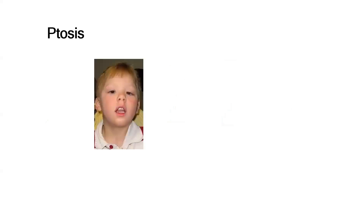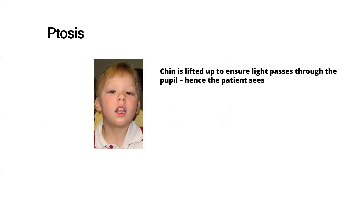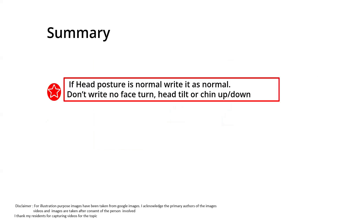In ptosis, the patient adopts a chin up position so that light passes through the pupil for clear visual acuity. In summary, when head posture is normal, document it as 'head posture normal, erect and straight' — do not write 'no face turn, no head tilt, no chin up or down.' Check that both ear lobes are equally visible, the ear-to-shoulder distances are equal, and from the side the chin is not tilted up or down.